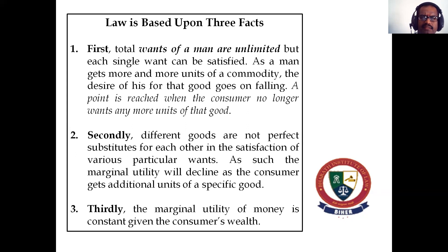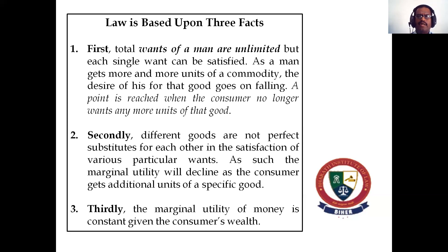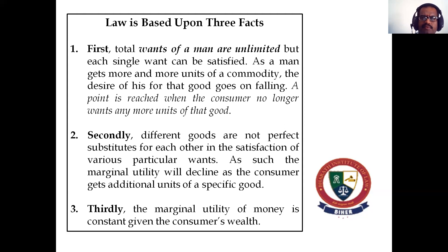The law is purely based on three facts. First, total wants of a man are unlimited, but each single want can be satisfied. As a man gets more and more units of a commodity, the desire for that good goes on falling, until a point is reached when the consumer no longer wants any more units of that commodity. Because wants are unlimited, the person tries to satisfy his or her own wants based on certain variables.